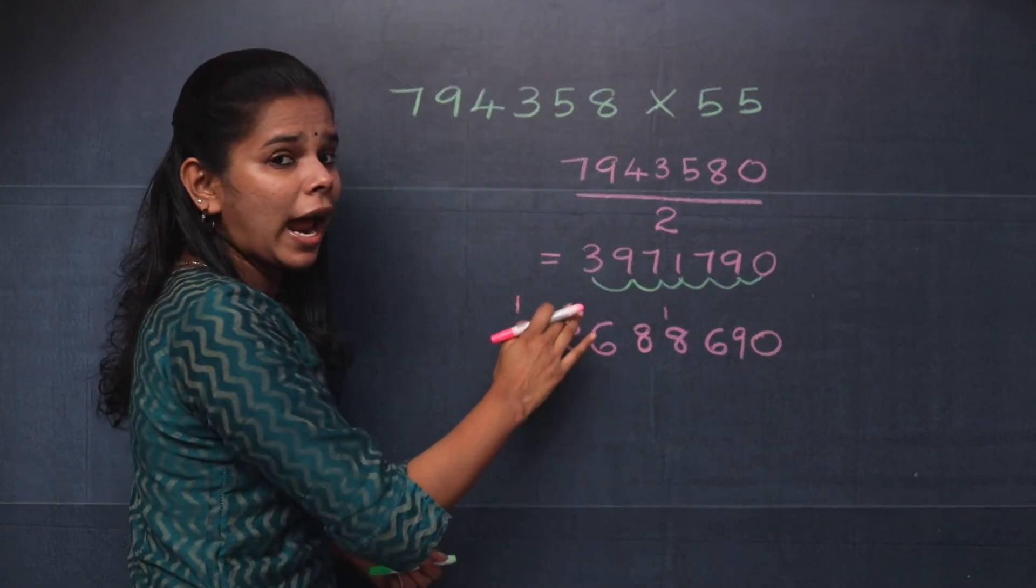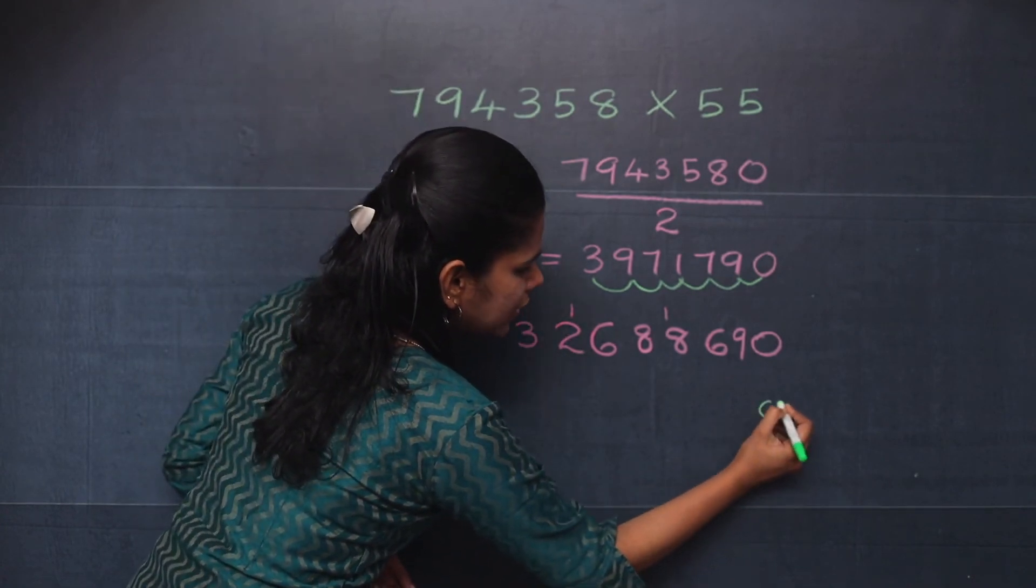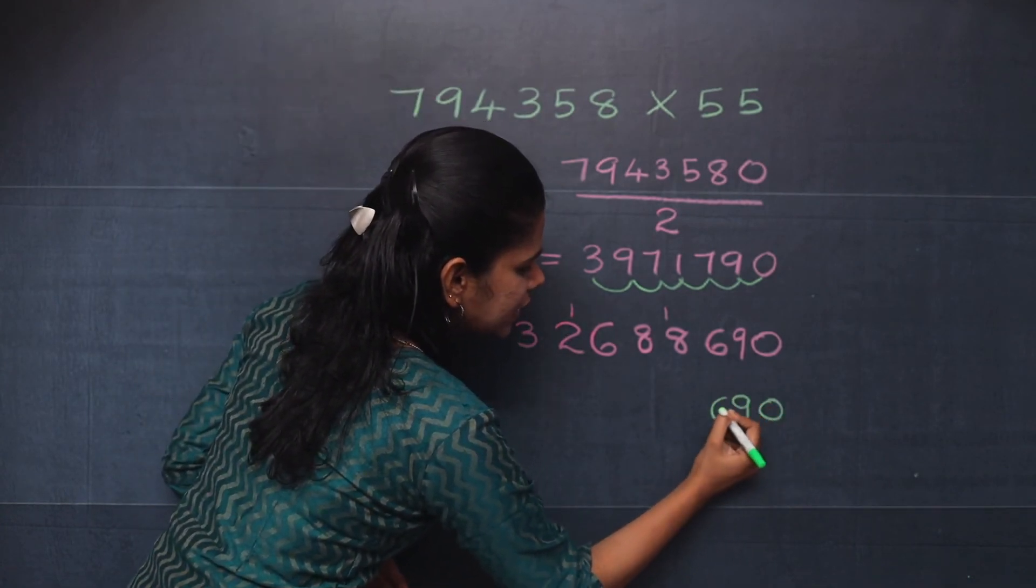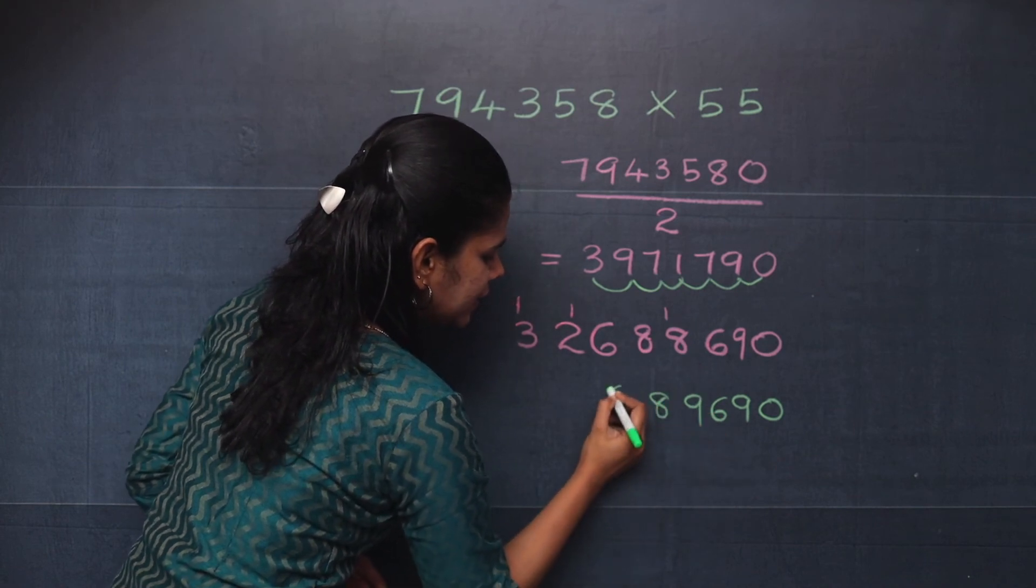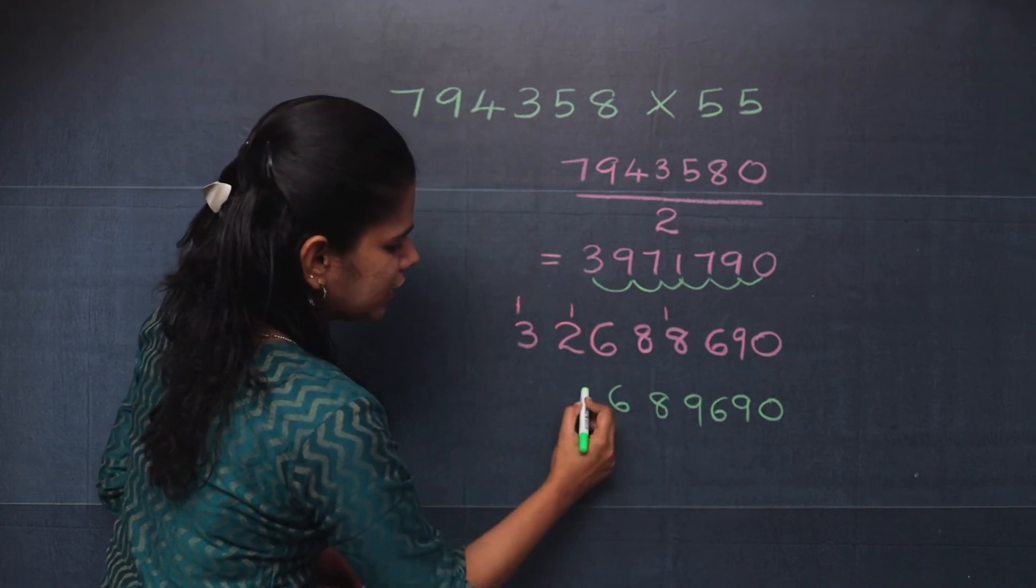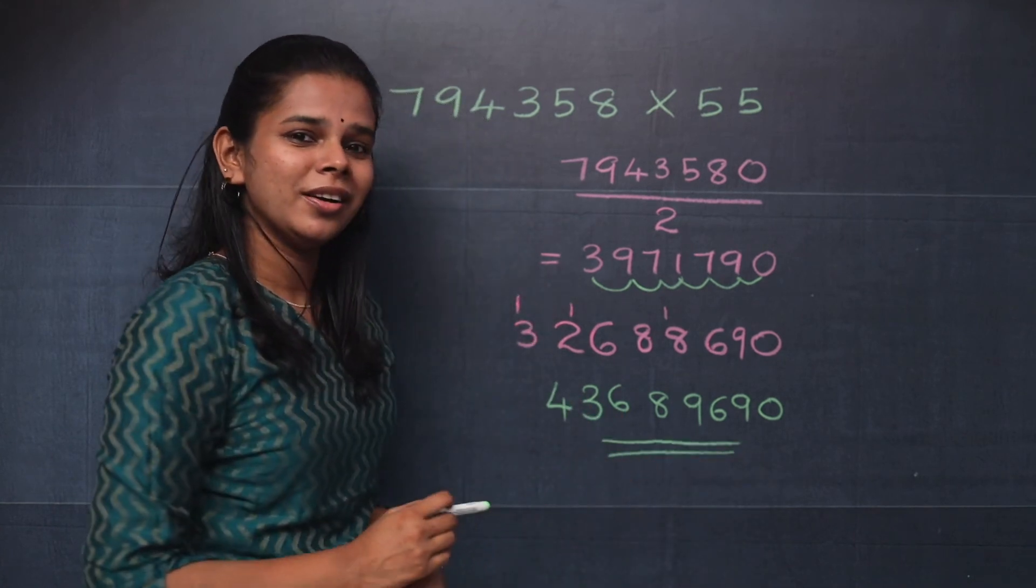Now you need to add the carry overs. So it becomes 0 you will write here, 9, 6, 1 plus 8 is 9, 8, 6, 1 plus 2 is 3 and 1 plus 3 is 4. So this becomes your answer.